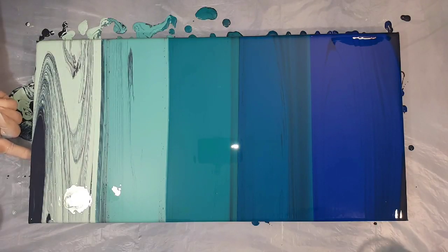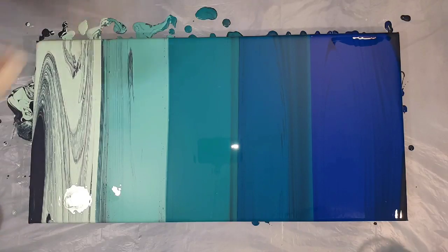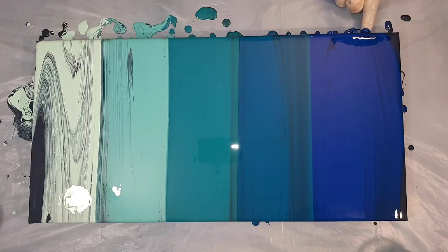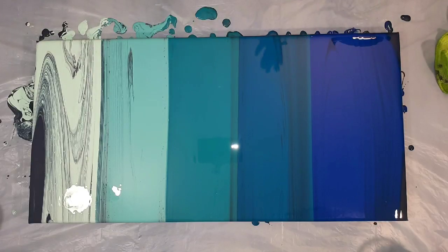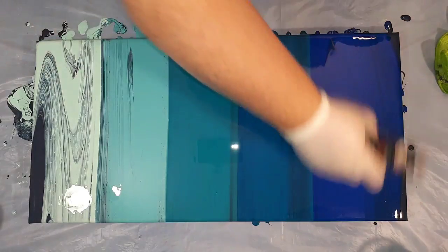So that section I just put another bead of the dark navy down that edge as that was where I held it while I tilted. So just making sure that that was all nicely coated.